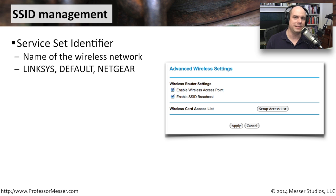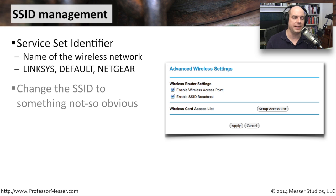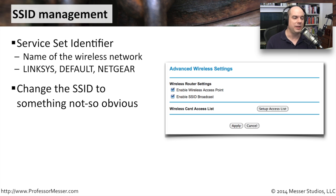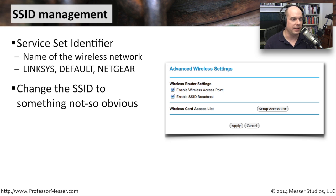Should we really be broadcasting the fact that we have a wireless access point here? One of the things you can do is change the SSID — the service set identifier — to something that's not quite so obvious. Make sure it doesn't use a default name like Linksys, and maybe not even give it a name that refers back to your organization. Give it something very generic.